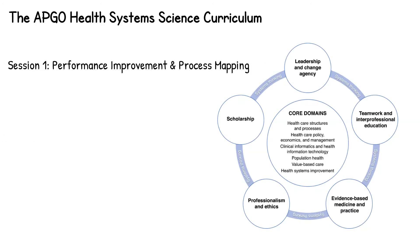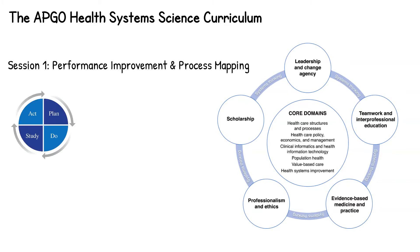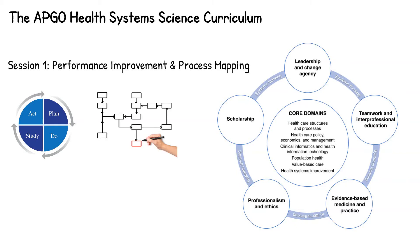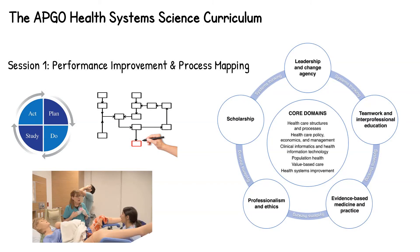The first program centers around a postpartum hemorrhage. In it, you will first learn about performance improvement, including plan-do-study-act cycles, and process and swim lane analysis. You will then watch a simulated postpartum hemorrhage and identify, using a swim lane analysis, potential areas for improvement. This draws on concepts from healthcare structures and processes, healthcare policy, and health system improvement.